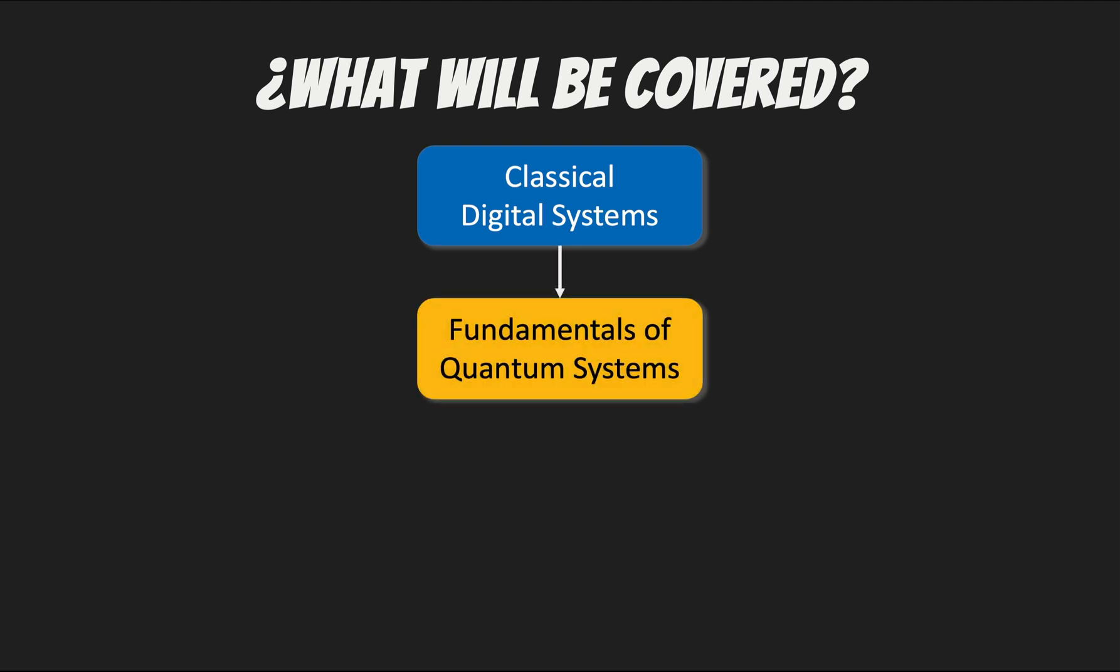Now as far as course content roughly the idea is to start with a very quick overview of what we call classical digital systems. This will include a quick recap of just binary numbers and digital logic but more importantly we'll start introducing some of the concepts that you're going to need for quantum computing like reversible circuits, a little bit of probabilistic systems and so on. Now the next section will be on the fundamentals of quantum systems where we'll just introduce the concept of a qubit, quantum circuits and some particular aspects that differentiate quantum computing from its classical counterparts.